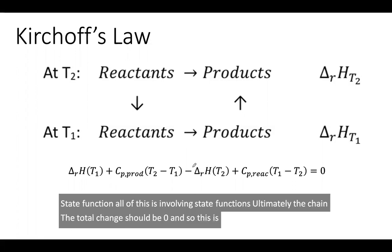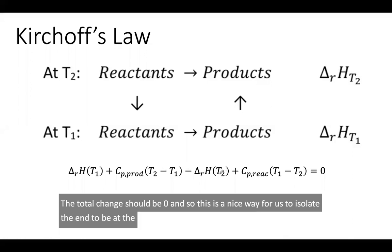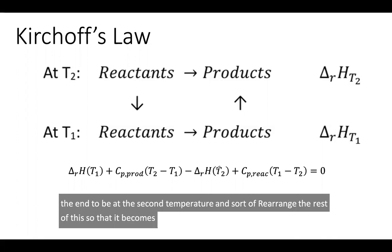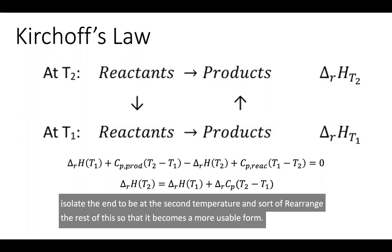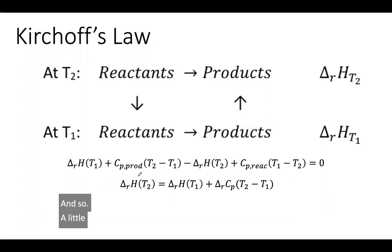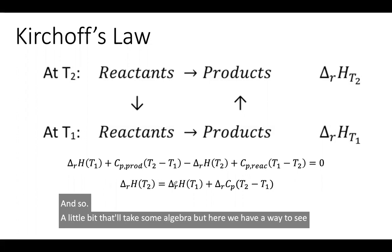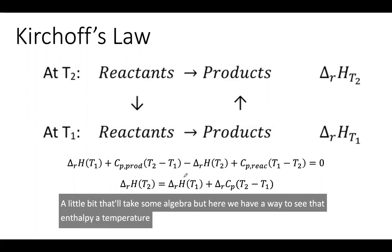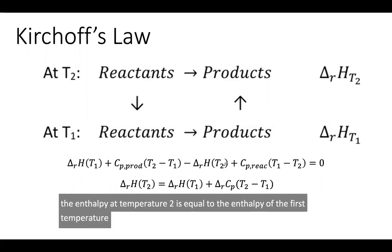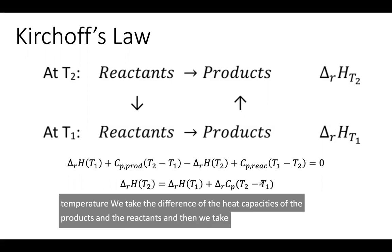This is a nice way for us to isolate the enthalpy at the second temperature and rearrange the rest of this so that it becomes a more usable form. We have a way to see that the enthalpy at temperature two is equal to the enthalpy at the first temperature, we take the difference of the heat capacities of the products and the reactants, and then we take into account the temperature change.